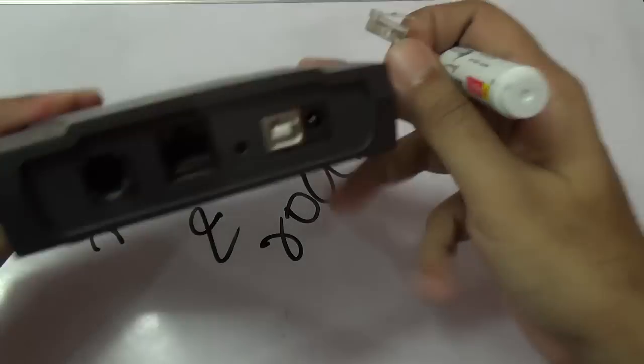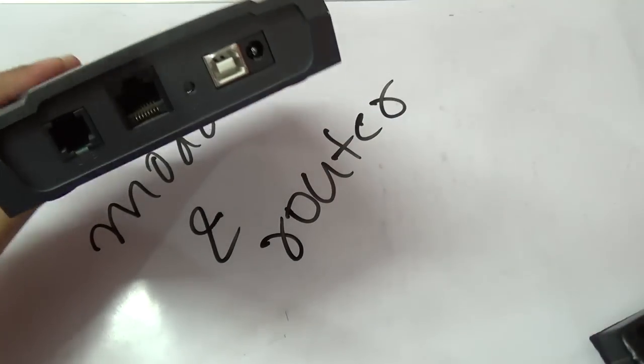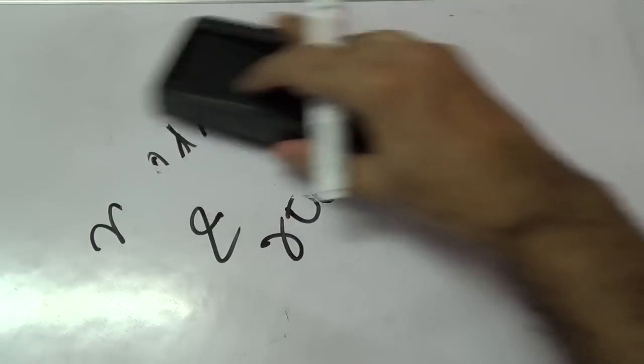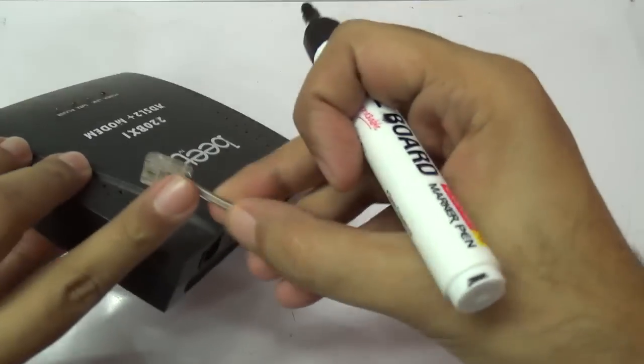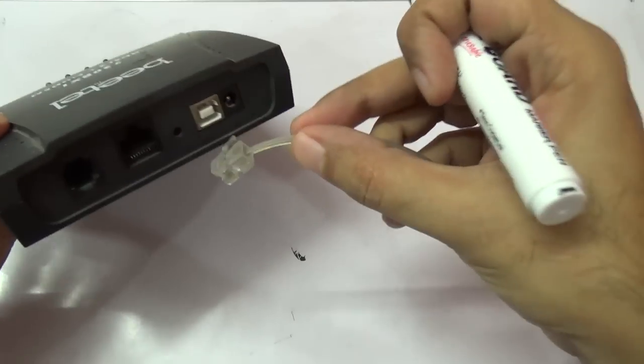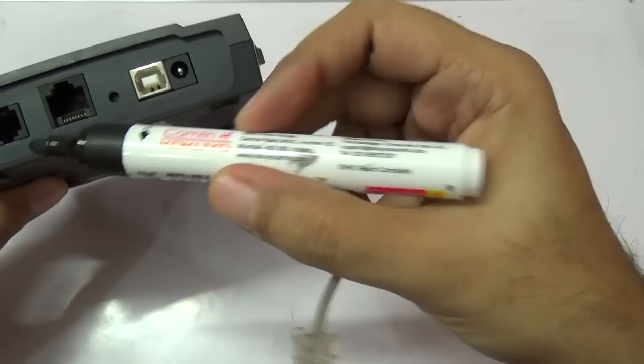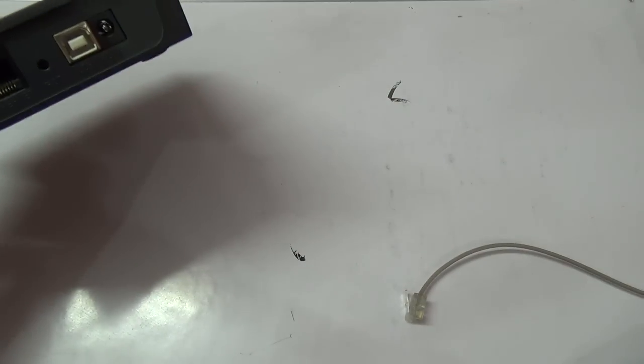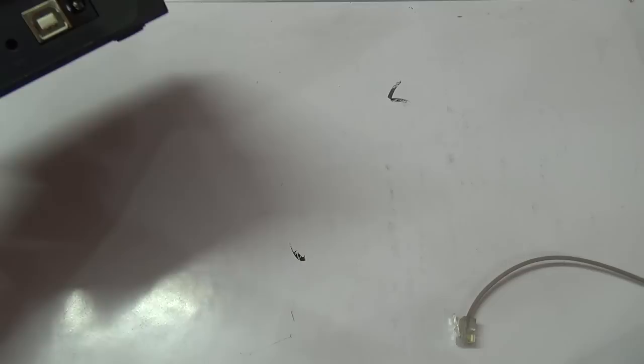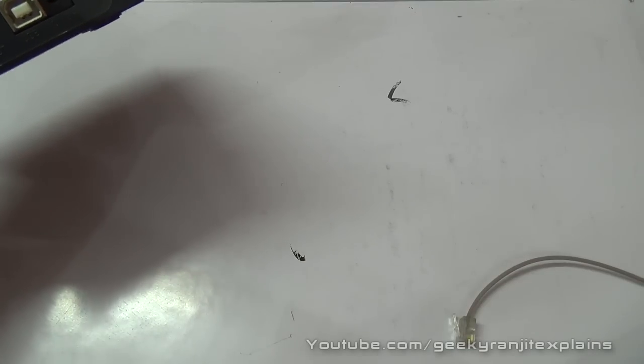This is an ADSL modem. What a modem does is modulates or demodulates the signal. It just converts the signal that comes over this telephone line, for example for the ADSL model, and converts it to a digital medium which your computer can understand. Most probably the modems these days convert it to an Ethernet cable that you can directly attach to your computer.